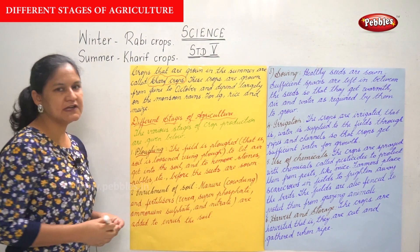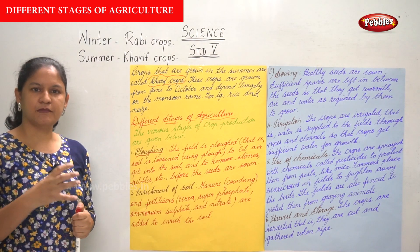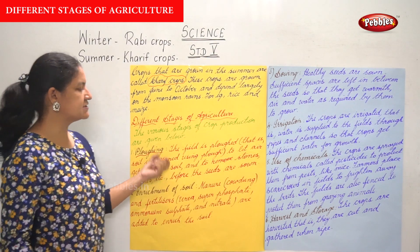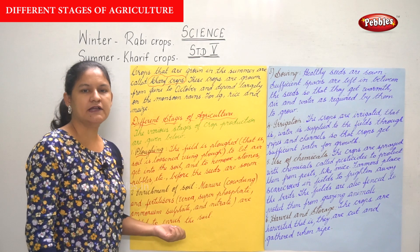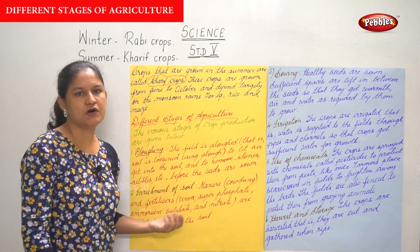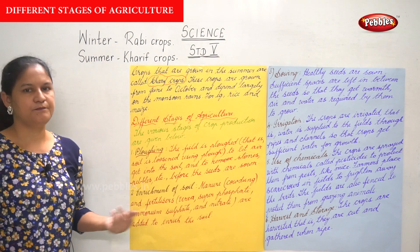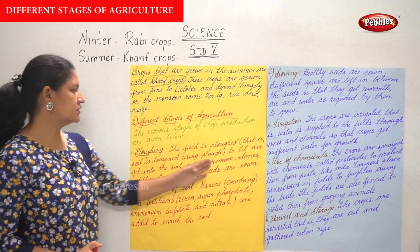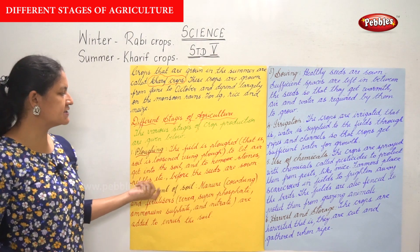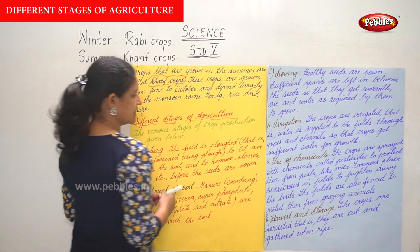The field is ploughed — that is, it is getting ready for the crops to be sown. The soil is loosened using a plough. This is done either by using animals like cows or by machines and other scientific advancements. The soil is loosened to let air get into the soil and to remove stones and pebbles.